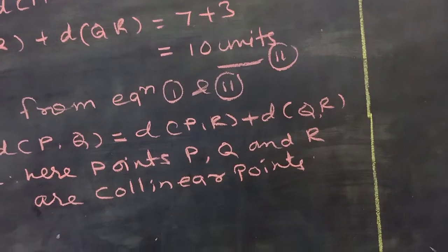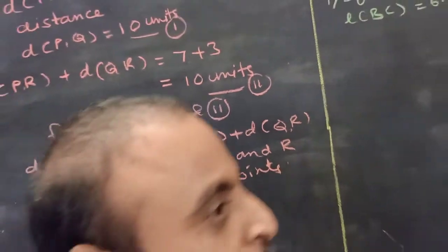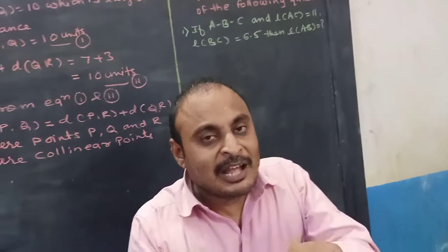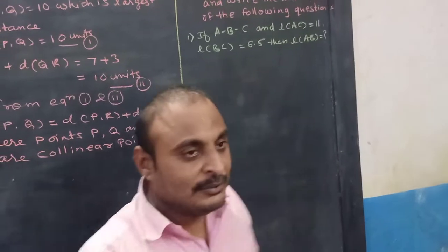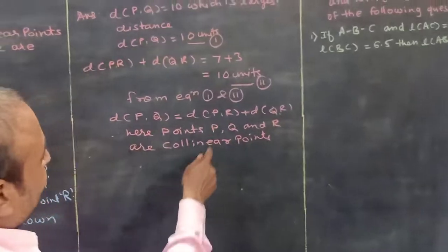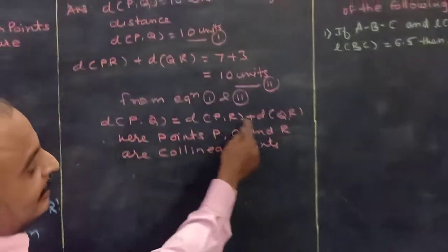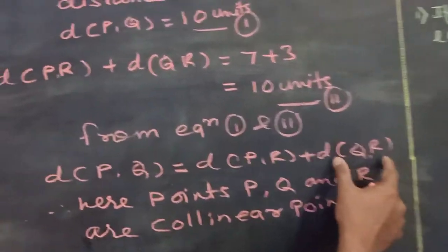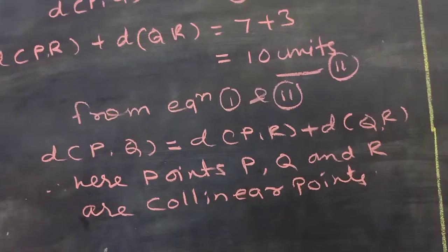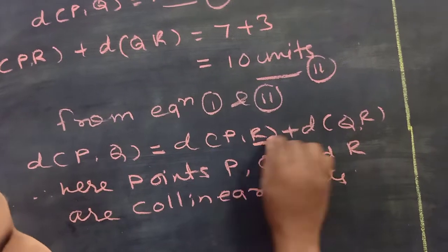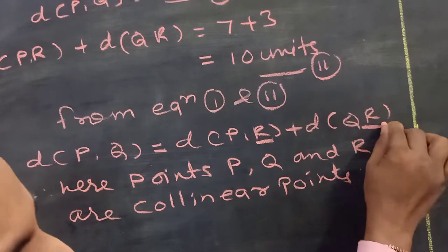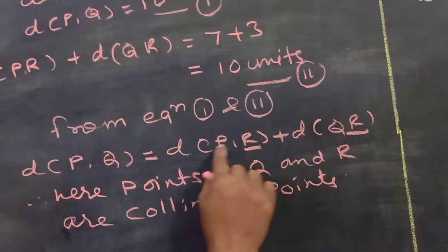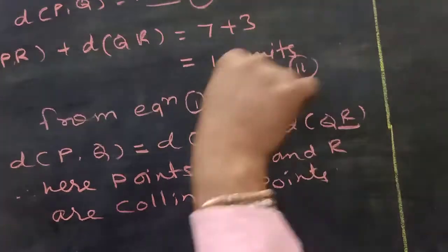Now we have to decide which point will lie in between the other two points. You can see on the right-hand side there are two distances that share a common point, which is R. This means that R is the common point between the two distances PR and QR. So point R lies in between point P and point Q.